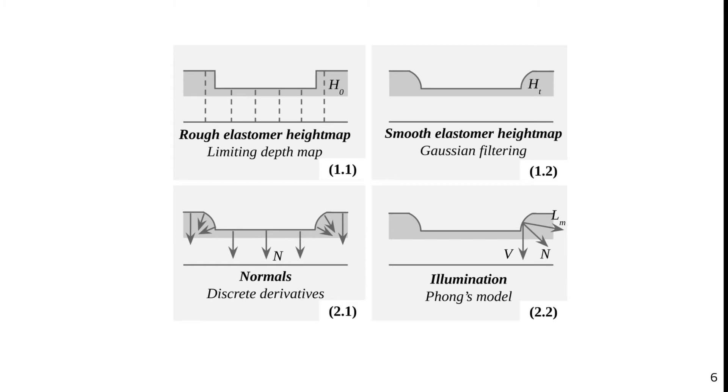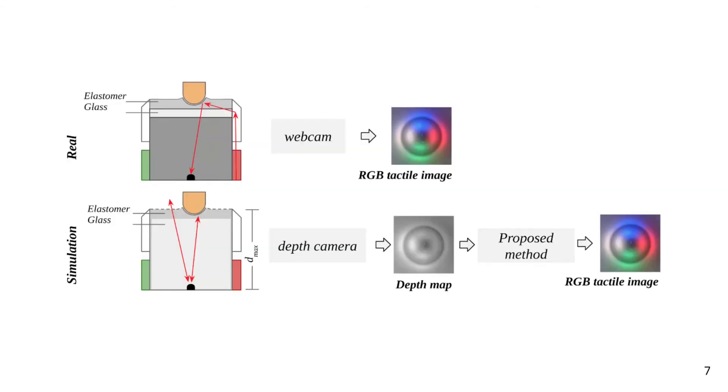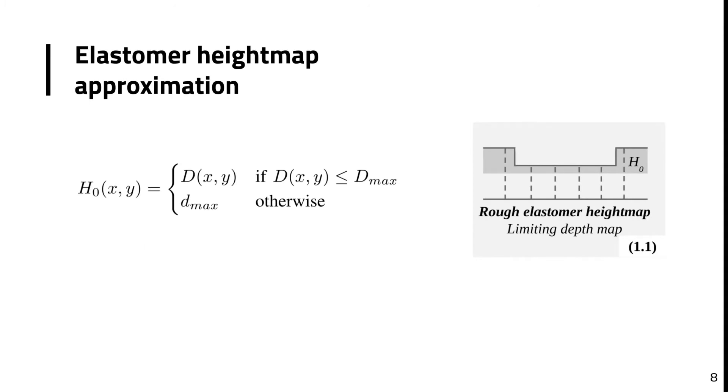Firstly, the height map of the elastomer is computed from the depth map of the object that is in contact with the elastomer. And secondly, the internal illumination of the elastomer is computed using Fong's illumination model. For the first step, i.e. to obtain the elastomer height map, a structured light-based depth camera is placed at the same position as the RGB camera is in the real sensor. The simulated camera captures the depth image d of the object in contact with the elastomer. The obtained depth map is then thresholded by a maximum distance d max that corresponds to the maximum height that the elastomer would be able to contact, resulting in the elastomer height map h0.